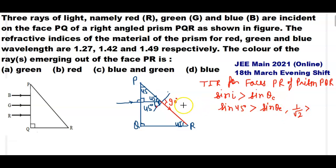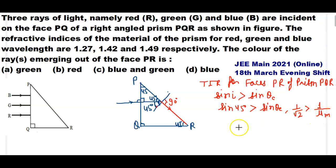The critical angle is given by sin(θc) = refractive index of rarer medium divided by refractive index of denser medium. Since the rarer medium is air with refractive index 1, we get: refractive index of the prism material must be greater than √2, which equals approximately 1.414.